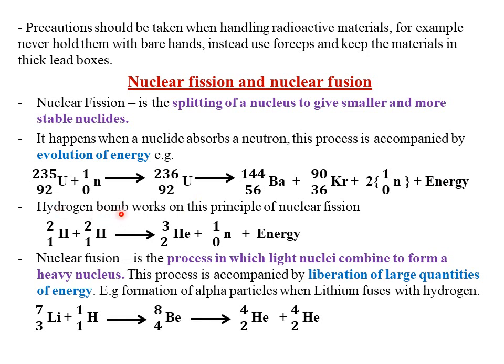So hydrogen bomb works on this principle of nuclear fission, whereby we have two hydrogen atoms, which has mass number of 2 and atomic number 1, which are combining. Then they are splitting to form helium, which has a mass number of 3 and atomic number 2. Then we also have a release of a neutron, which has a mass number of 1 and no atomic number. Then we have evolution of energy.